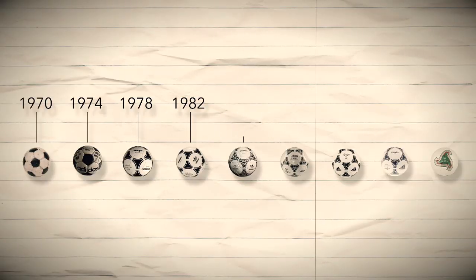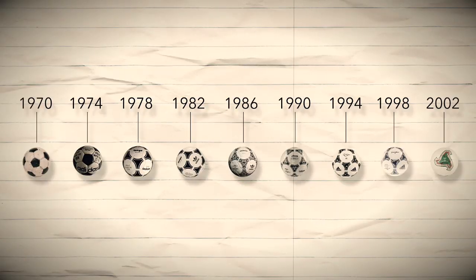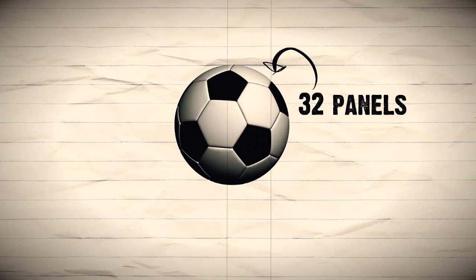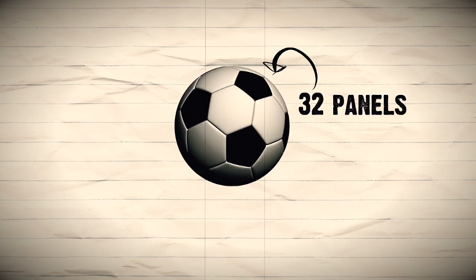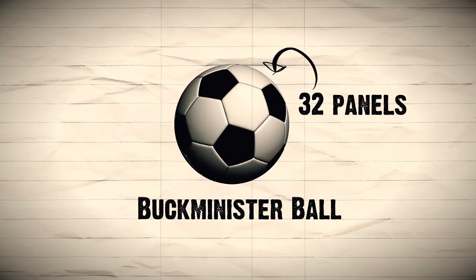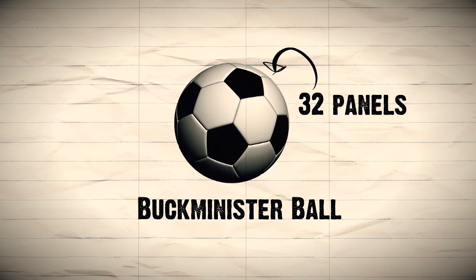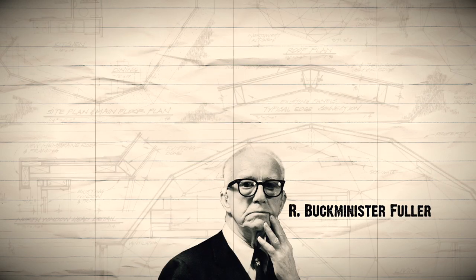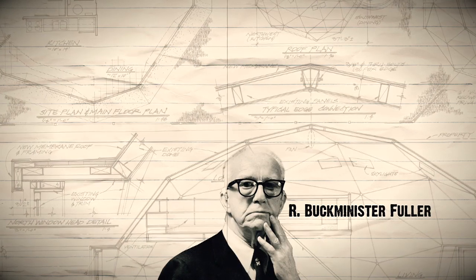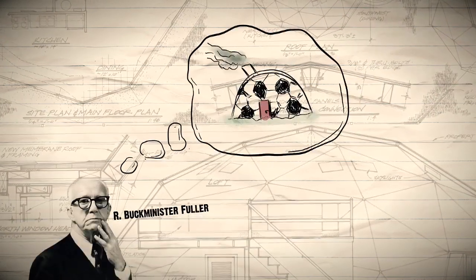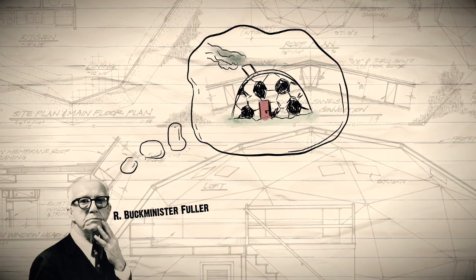Up until 2006 the ball was composed of the traditional 32 panels. The design is called the Buckminster ball, after American architect Richard Buckminster Fuller, who came up with the design as he was trying to find new ways of constructing buildings using a minimal amount of materials.